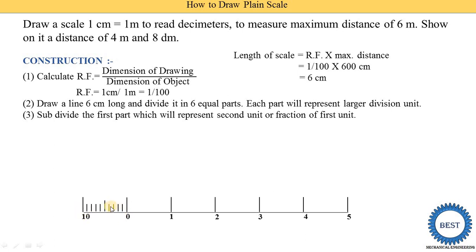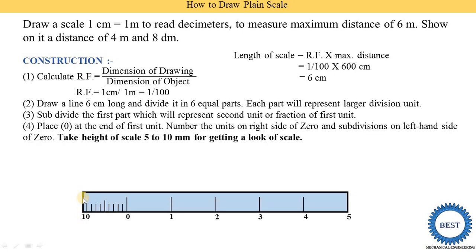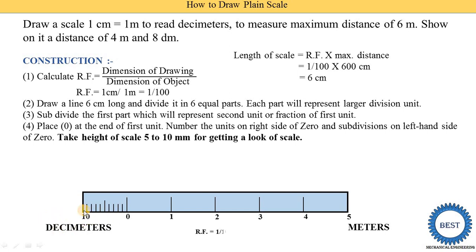Each 1 mm subdivision equals 1 decimeter, so there are 10 decimeters total. Then we extend the height to about 10 mm to give the appearance of a scale, and draw a rectangle to make it look like a proper scale. On the right side, 0 to 5 indicates meters, so we write 'meters' there. The 0 to 10 part indicates decimeters, so we write 'decimeters' there. We also write the representative fraction, which is 1 upon 100.